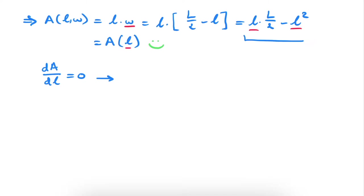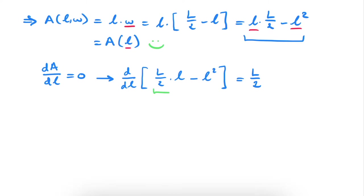So what we have to do is simply derive this function with respect to our variable L. We have: capital L divided by two, multiplied by our variable, minus our variable squared. This derivative straightforwardly becomes L divided by two — since capital L over two is a constant coefficient — minus two times L, because the square drops in front and the exponent drops by one.